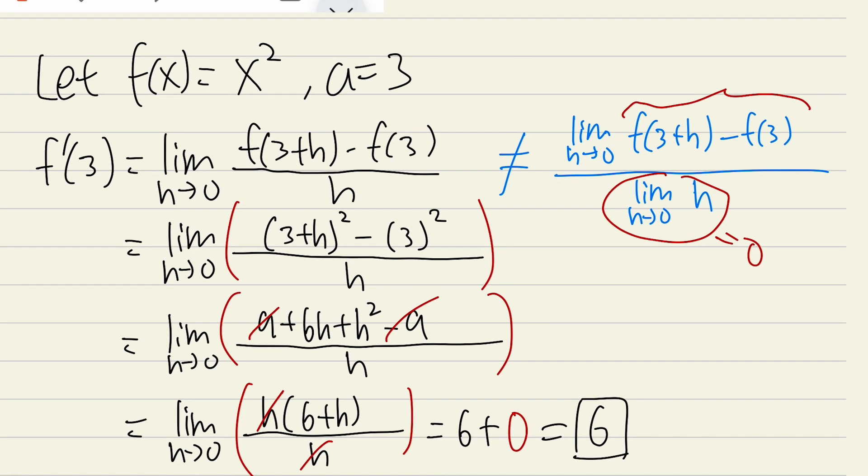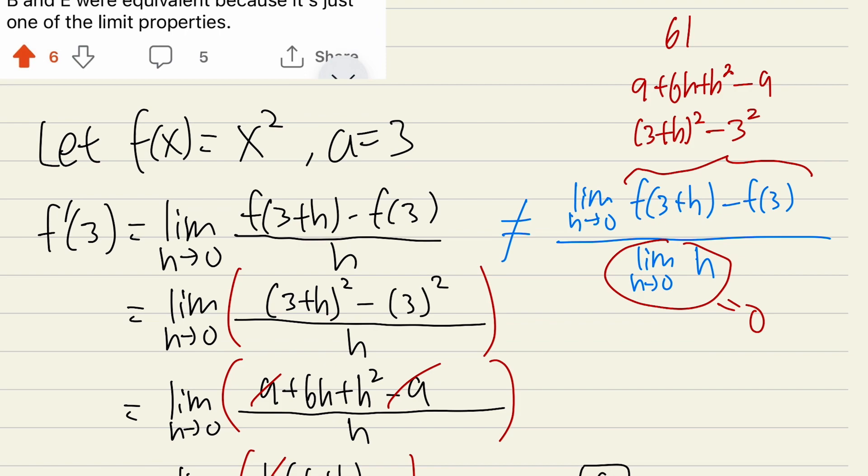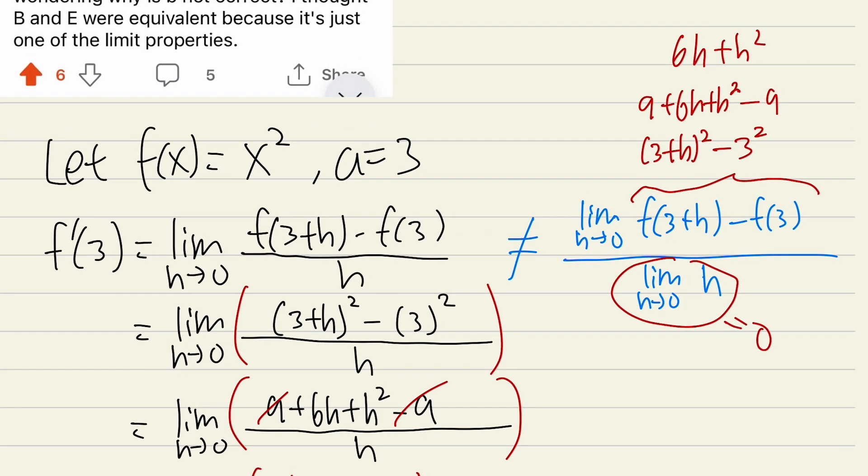If you do that, that would be 3 plus h square minus 3 square and then you will end up with 9 plus 6h plus h square minus 9 and then you take the limit as h approaching 0 like that. But by now, it's too late. You are not allowed to cancel the h here and the h from the bottom because they don't belong to the same limit if you look at it like that individually.